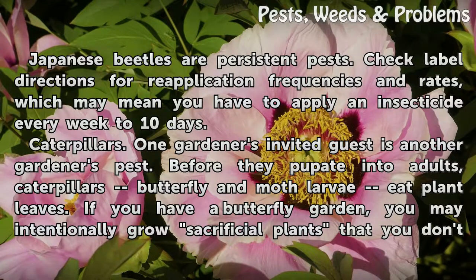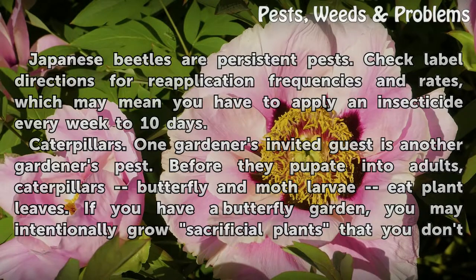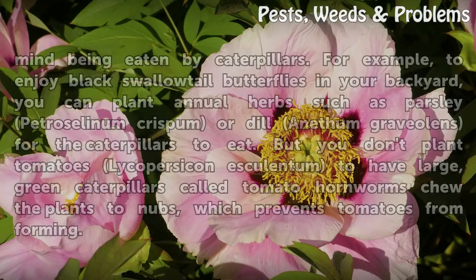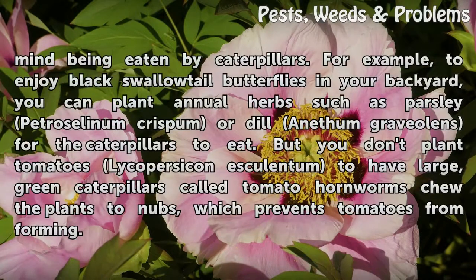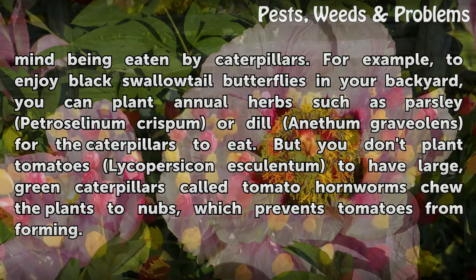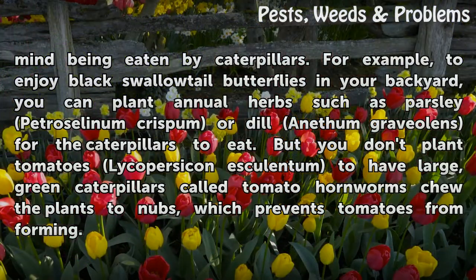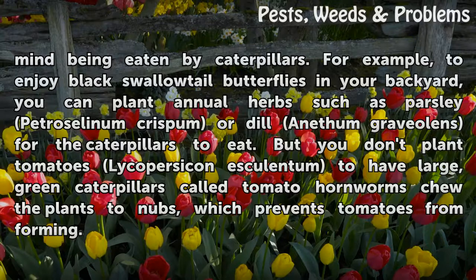Caterpillars: one gardener's invited guest is another gardener's pest. Before they pupate into adults, caterpillars — butterfly and moth larvae — eat plant leaves. If you have a butterfly garden, you may intentionally grow sacrificial plants you don't mind being eaten. For example, to enjoy black swallowtail butterflies in your backyard, you can plant annual herbs such as parsley (Petroselinum crispum) for the caterpillars to eat.